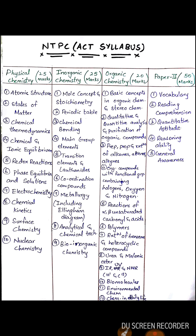Paper 2 consists of 50 marks and includes vocabulary, reading comprehension, quantitative aptitude, reasoning ability, and general awareness. If you want me to explain any of these topics from chemistry, please feel free to comment below. That's it for today — best of luck, keep going, keep practicing, keep encouraging. Thank you for watching.